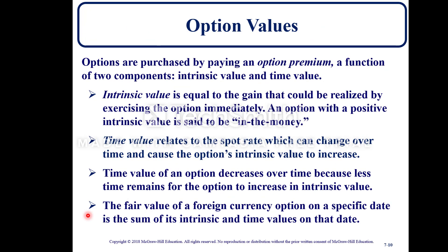Options are purchased by paying an option premium, which is a function of two components: intrinsic value and time value. Intrinsic value equals the gain that could be realized by exercising the option immediately; an option with positive intrinsic value is said to be in the money. Time value relates to the spot rate, which can change over time and cause the option's intrinsic value to increase. The time value of an option decreases over time because less time remains for it to increase in intrinsic value. The fair value of a foreign currency option on a specific date is the sum of its intrinsic and time value.